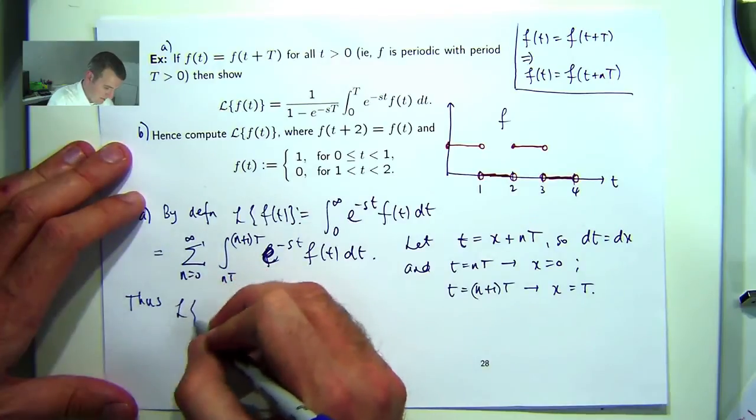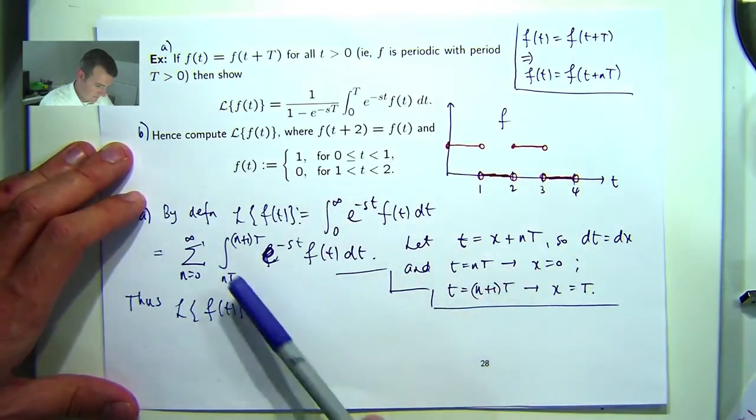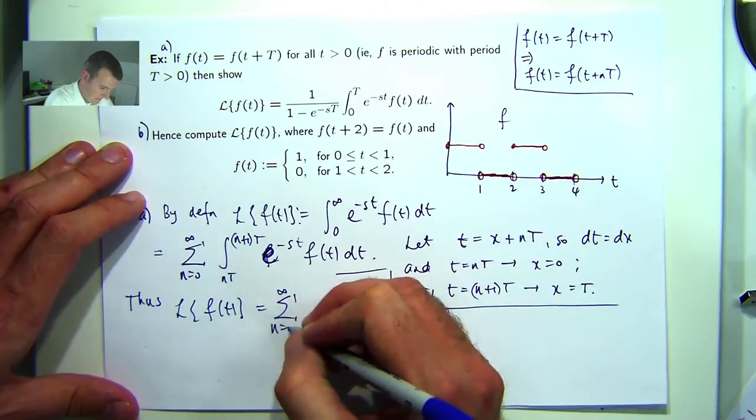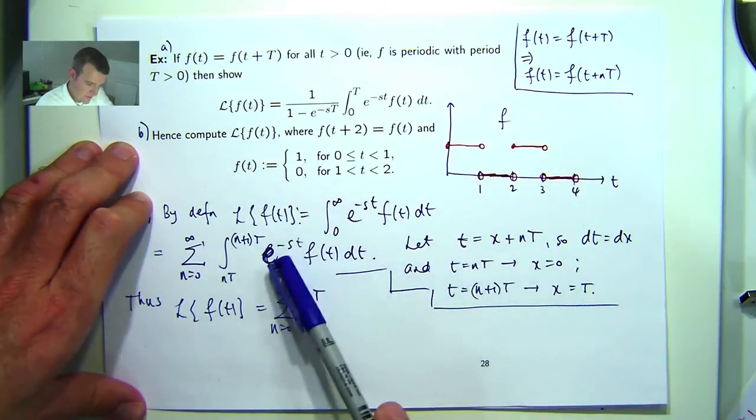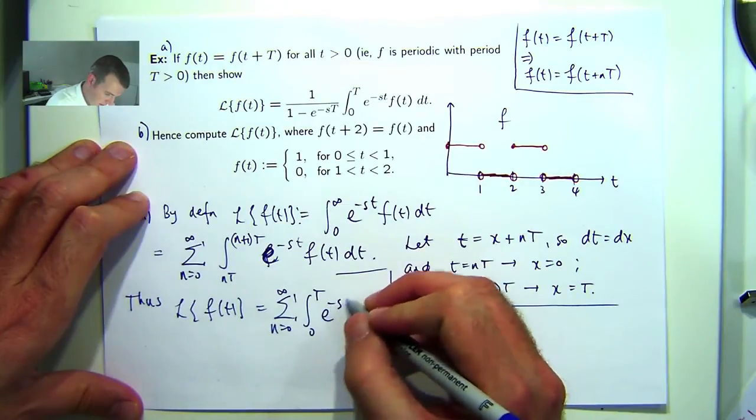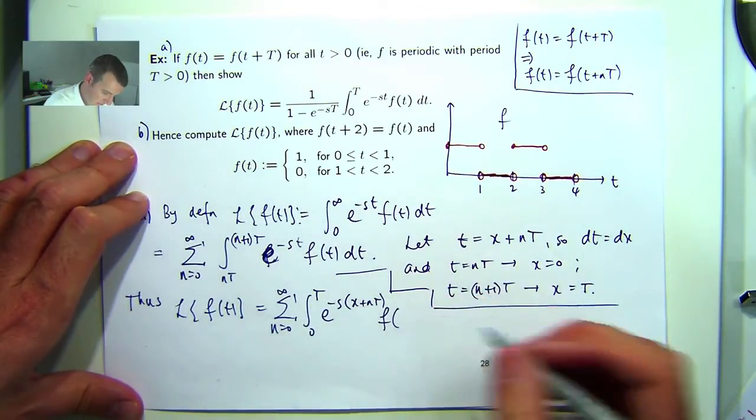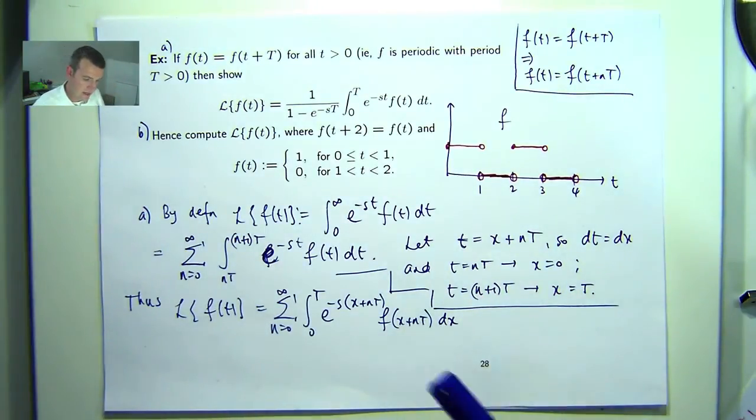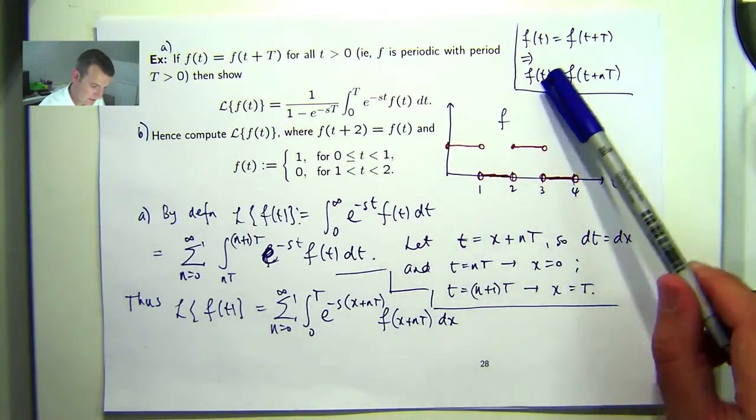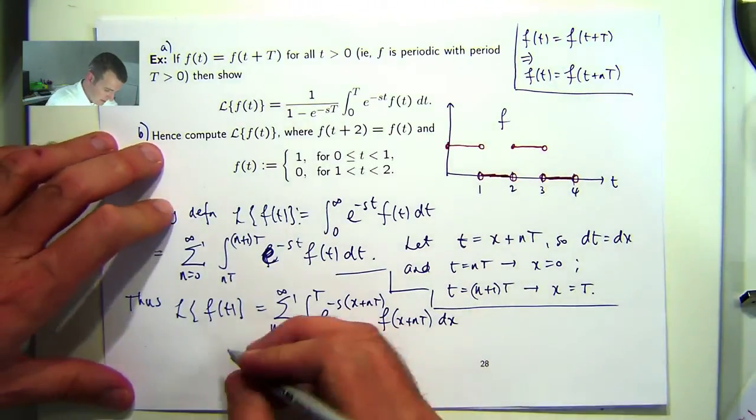So that Laplace transform then is the following. This sum is still going to be here. We're going to be integrating from 0 to T, big T, with respect to x. Let's replace little t with x + nT. And I can replace little t with that in the argument of f, and I'm going to have a dx over here. So now we can break up this exponential function, and we can simplify this through what I was explaining up here.